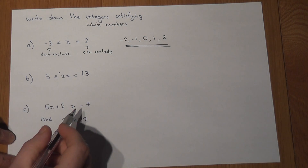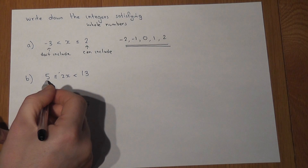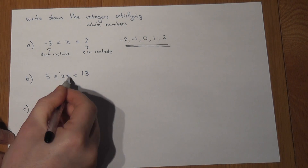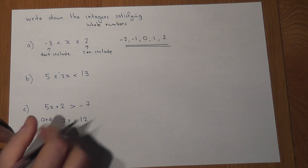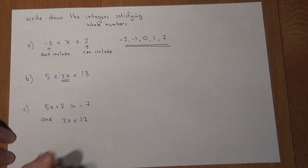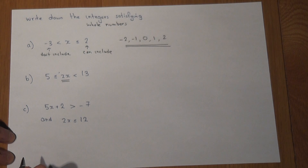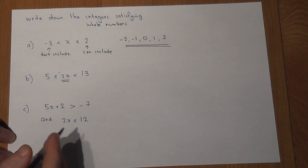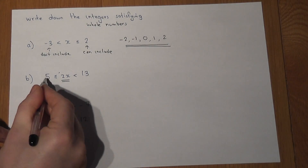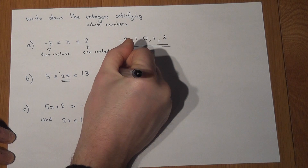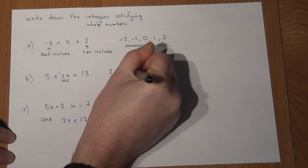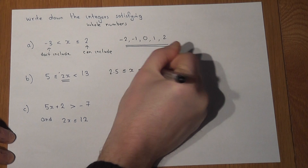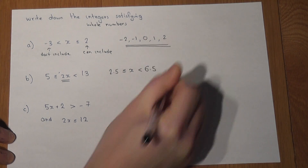In the second example we have five less than or equal to 2x less than 13. There is a 2x here, so if I halve the entire inequality, I get 2.5 is less than or equal to x is less than 6.5.